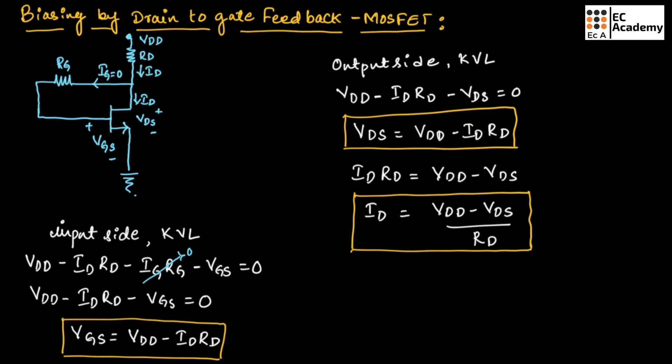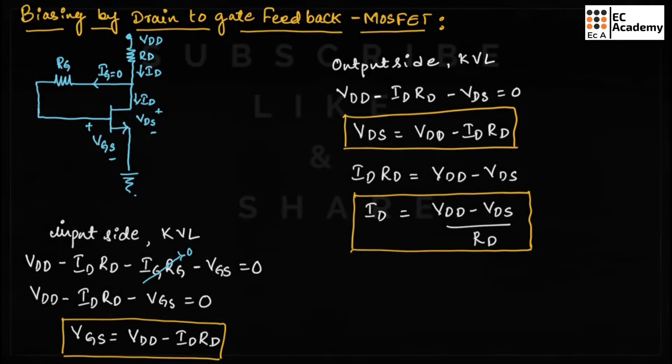This is about biasing by drain to gate feedback using MOSFET. Hope you have understood the topic. Thank you.